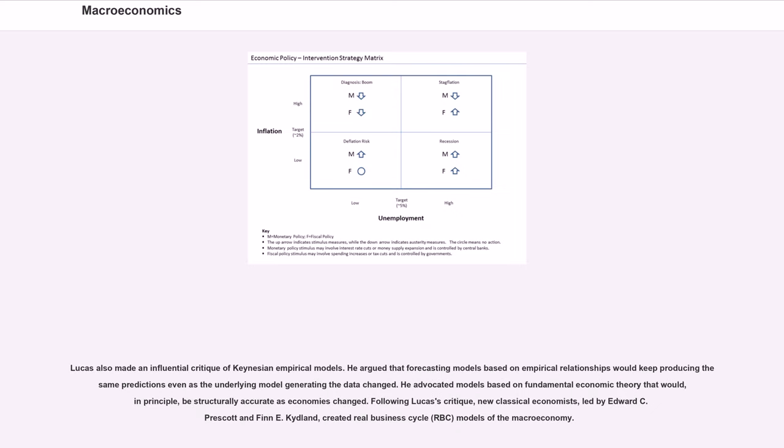Lucas also made an influential critique of Keynesian empirical models. He argued that forecasting models based on empirical relationships would keep producing the same predictions even as the underlying model generating the data changed. He advocated models based on fundamental economic theory that would, in principle, be structurally accurate as economies changed.